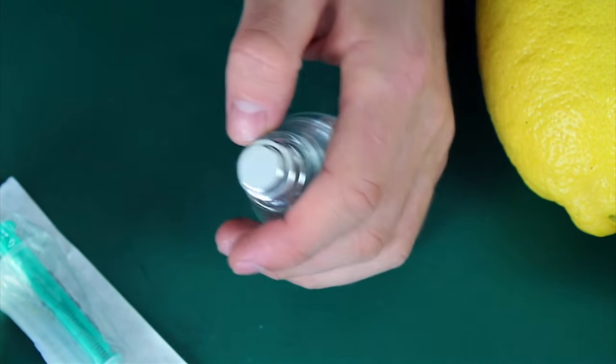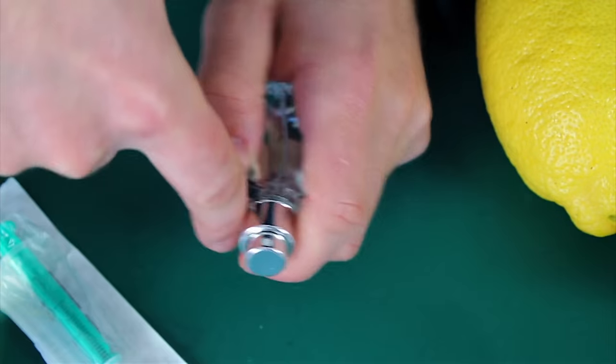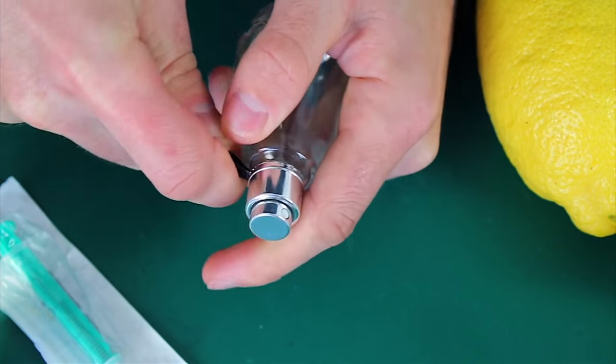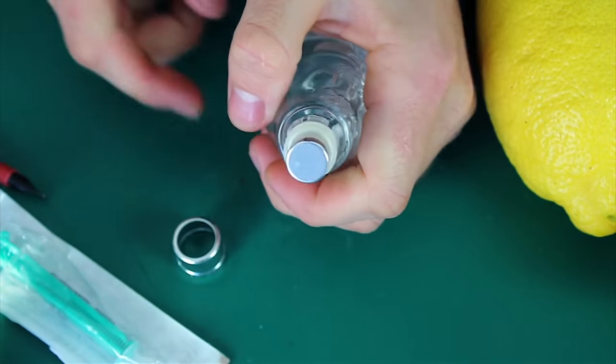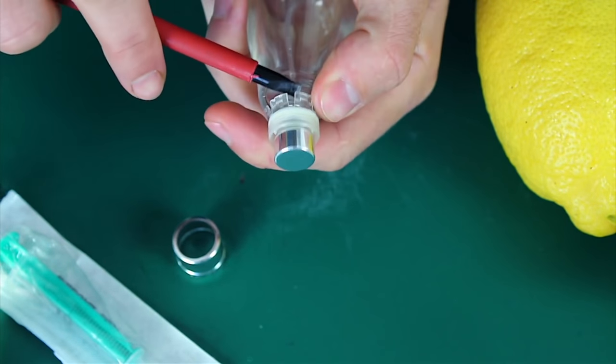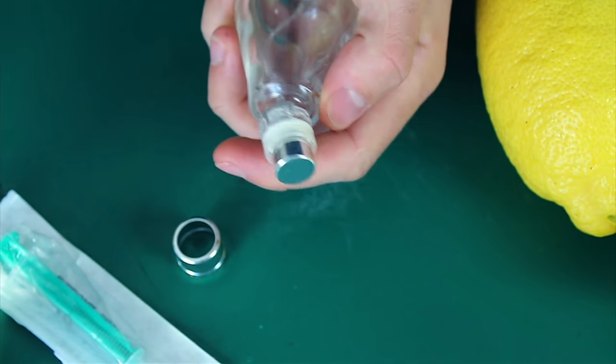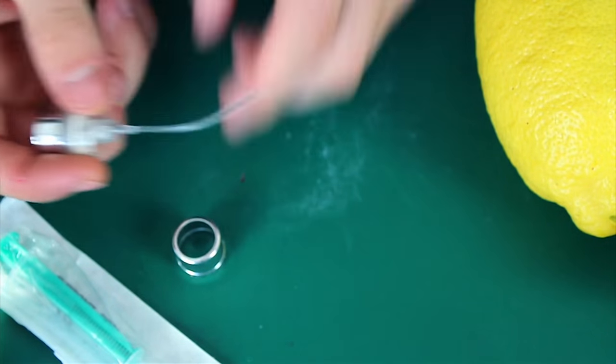First of all we need to remove the cap of our perfume bottle. Let's remove the plastic collar surrounding the neck. We won't need the plastic bottle anymore.